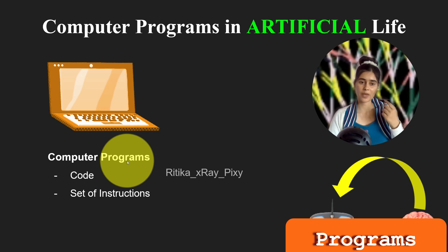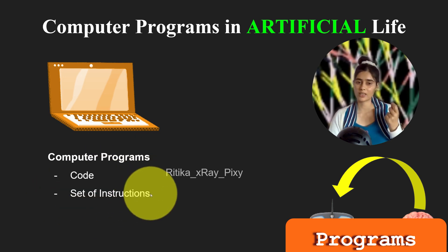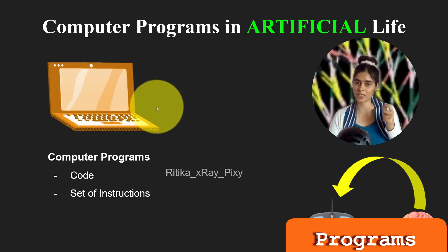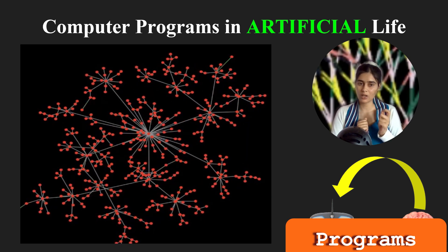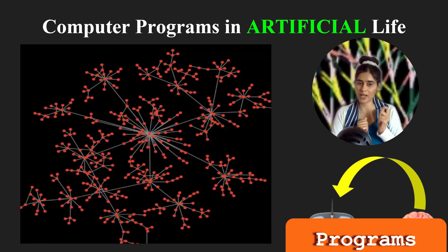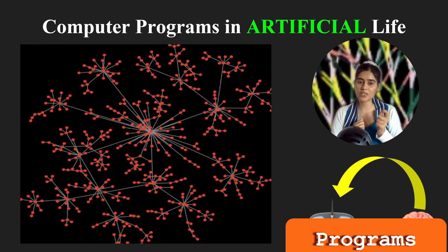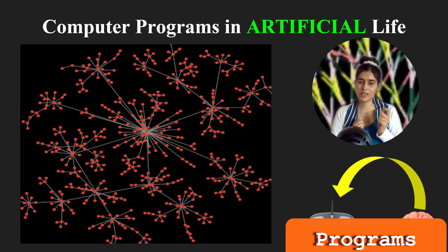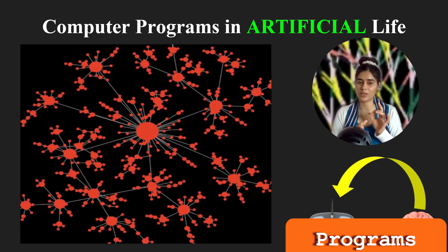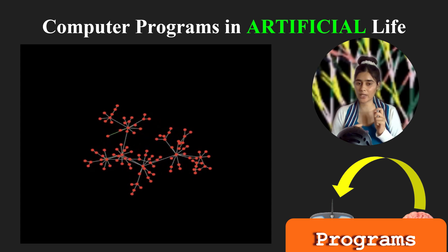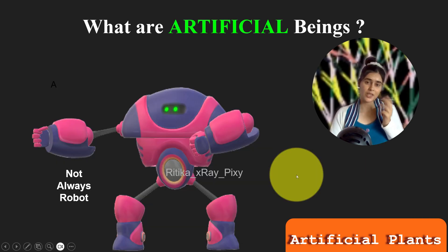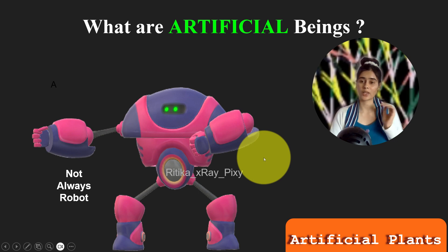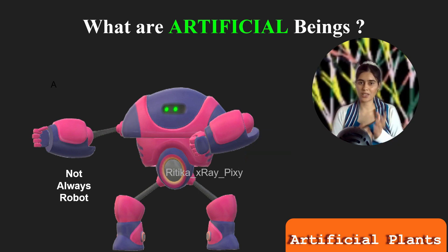A computer program is a set of instructions or code that tells a computer how to do specific tasks. In the digital world, researchers use computer programs to create or control the behavior of artificial beings. These programs define how artificial beings react and interact with each other, and even how they interact with their environment, by simulating lifelike processes in the digital or virtual world.